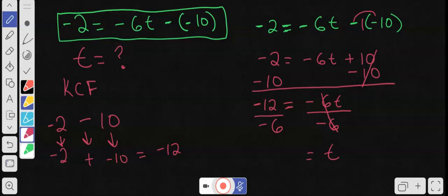So I got t here is equal to negative 12 divided by negative 6. A negative divided by negative is a positive, so it's just simply 12 divided by 6, which is just simply 2, a positive 2. So t is equal to positive 2. That is the answer, guys, and that's how you do it step by step.